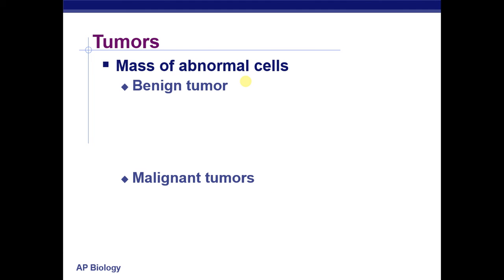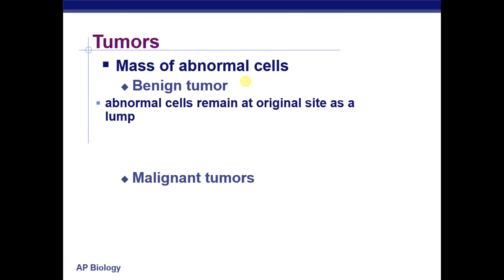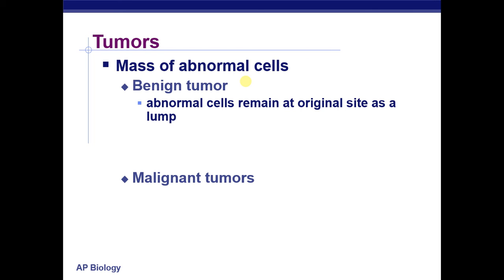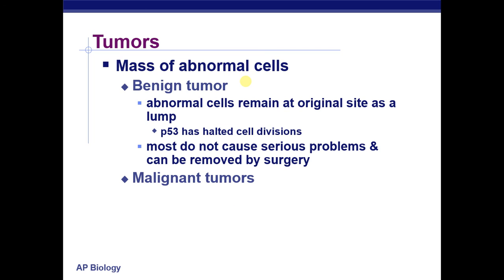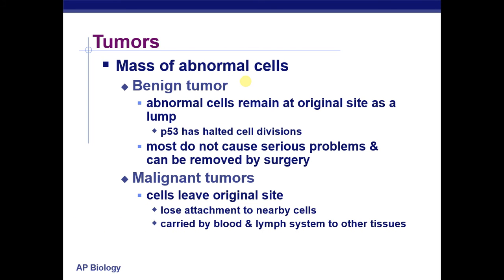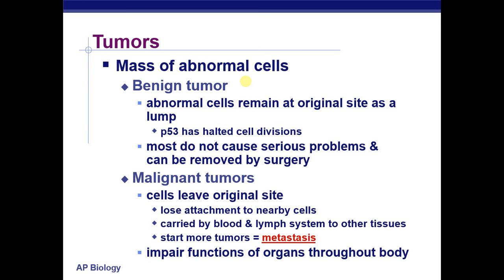Ultimately cancer develops into tumors — masses of abnormal cells. Benign tumors remain at their original site in a lump, don't divide past that point, and in most cases don't cause serious problems and can be removed by surgery. Malignant tumors, however, leave the original site and travel through the body. Carried by blood vessels or the lymphatic system to other parts of the body, this process is called metastasis, and the cancer can then impair functions of organs throughout the body.